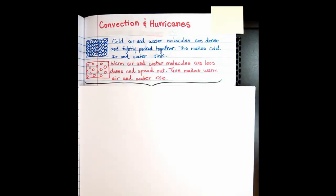The first thing is to understand why we have convection. The sun heats up fluid — that fluid can be air or water. When the sun heats up the fluid, the warm fluid rises and the cold fluid sinks.